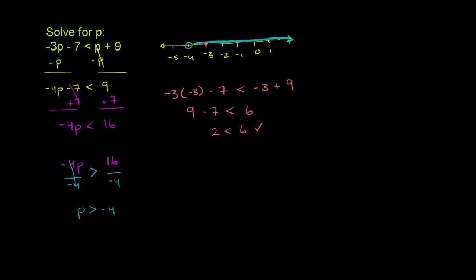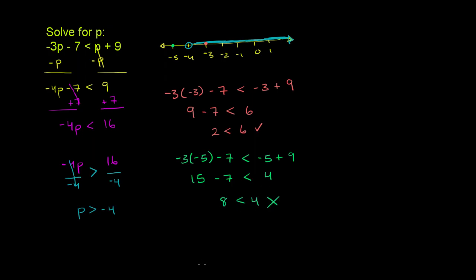Now let's try a value that definitely should not work — negative 5. Negative 5 is not in our solution set. We have negative 3 times negative 5 minus 7 — let's see whether it is less than negative 5 plus 9. Negative 3 times negative 5 is 15, minus 7 is 8, and negative 5 plus 9 is 4. So we get 8 is less than 4, which is definitely not the case. So p equals negative 5 doesn't work, and it shouldn't, because it's not in our solution set.